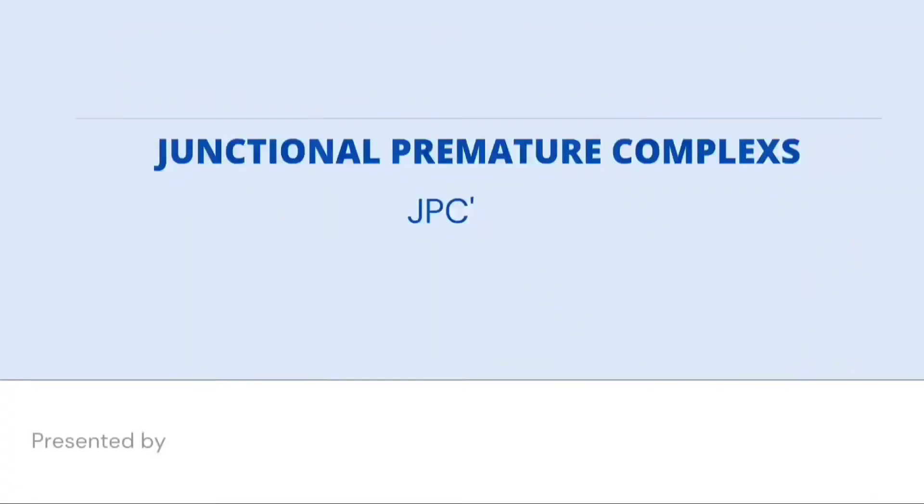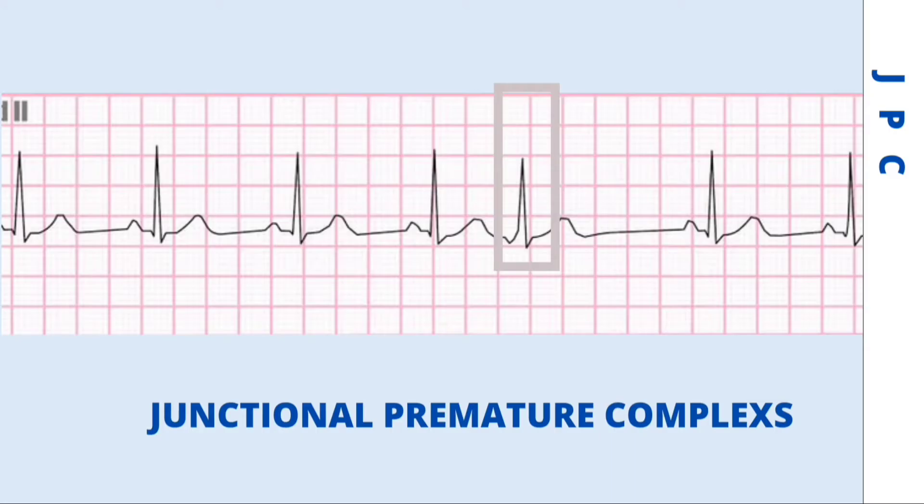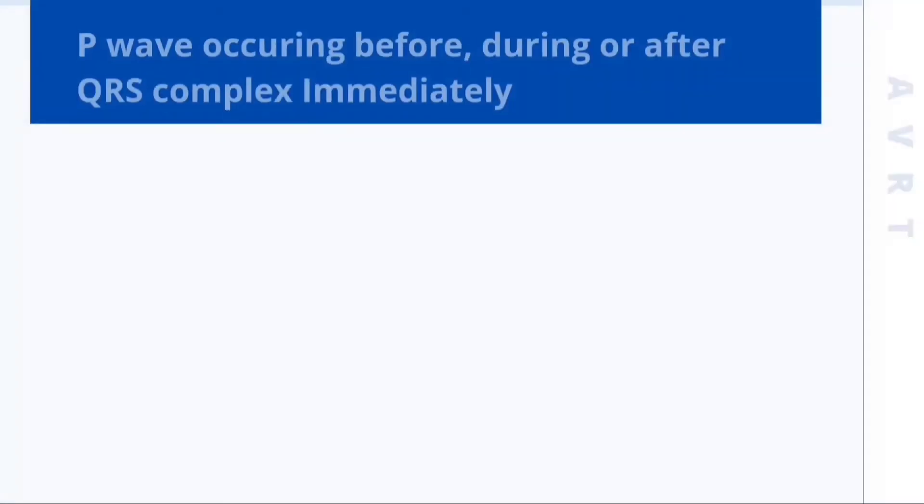Junctional premature complexes are premature QRS complexes of AV nodal origin. JPCs may have inverted P wave vectors in leads II, III, and aVF, occurring immediately before with a short PR interval or after the QRS complex.